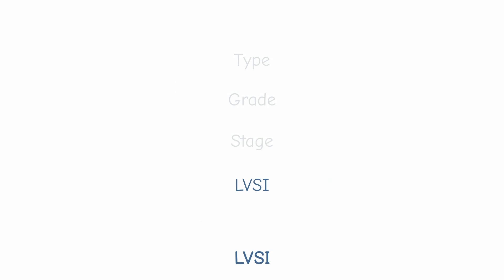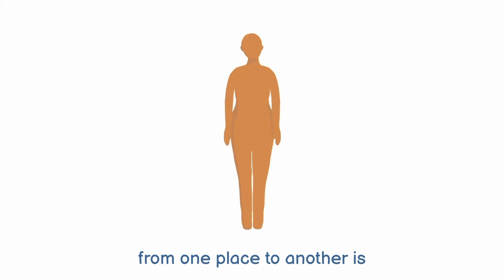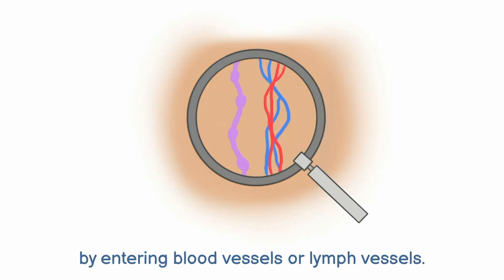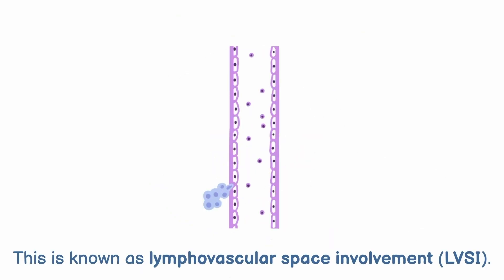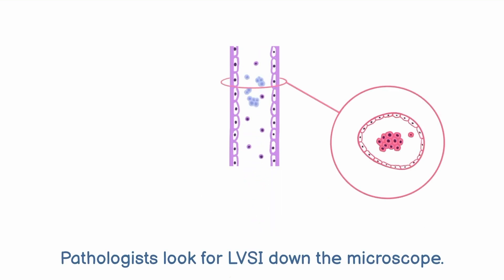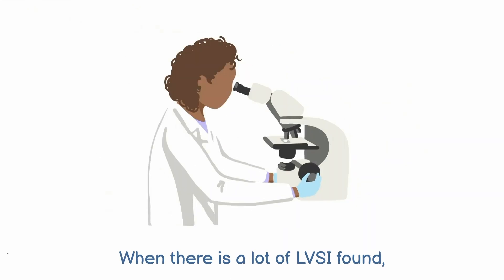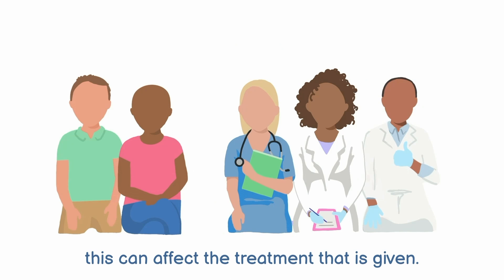LVSI. One of the ways in which cancer cells spread from one place to another is by entering blood vessels or lymph vessels. This is known as lymphovascular space involvement, or LVSI. Pathologists look for LVSI down the microscope. When there is a lot of LVSI found, this can affect the treatment that is given.